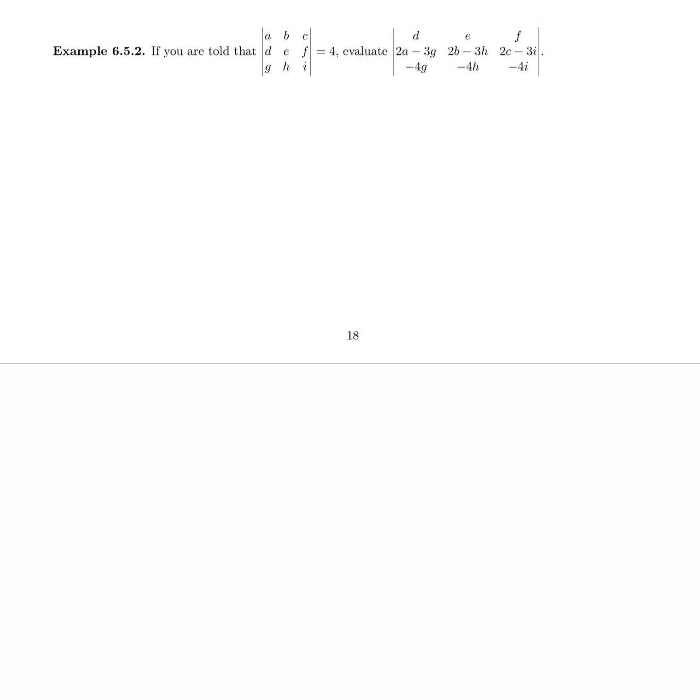So what we're going to do is use row operations to transform this complicated determinant down to this simple one, at which point we'll know the value and we can substitute it in.